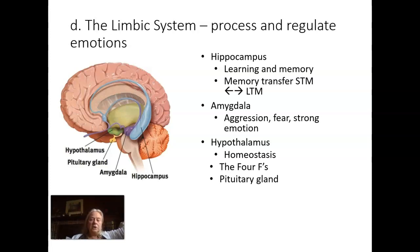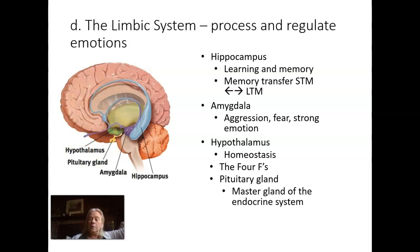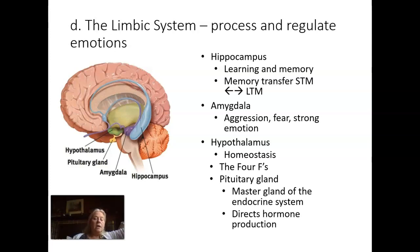The pituitary gland is attached to the hypothalamus and is the master gland of the endocrine system. You should have already studied the endocrine system. The endocrine system overall directs hormone production — chemicals released through our bloodstream — as opposed to neurotransmitters, which are released across the synaptic cleft.